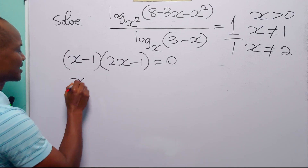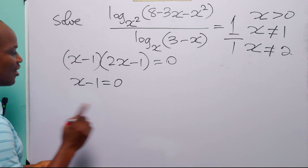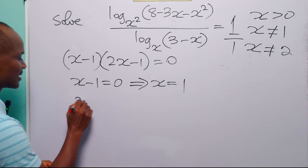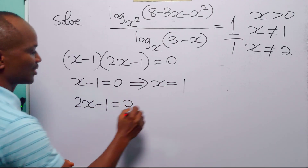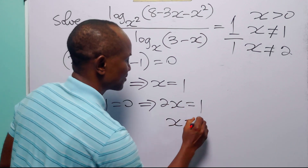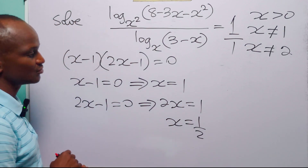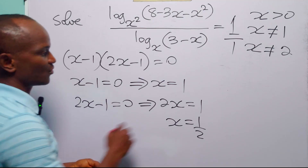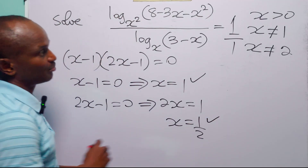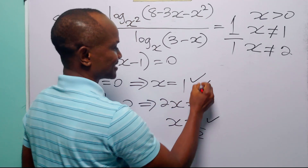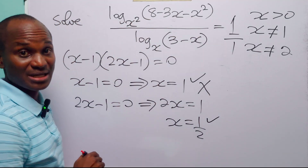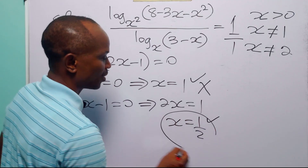Setting each factor to zero: either x minus 1 equals 0, giving x equals 1, or 2x minus 1 equals 0, giving x equals one-half. We have two candidate values, but from our earlier constraints x cannot equal 1. Therefore, the value of x that satisfies this logarithmic equation is x equals one-half.